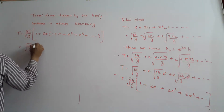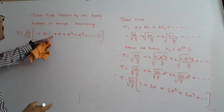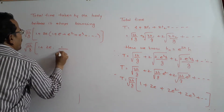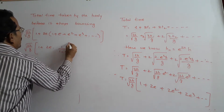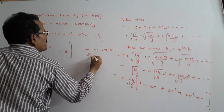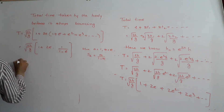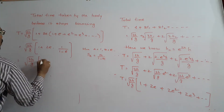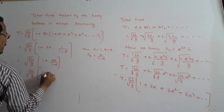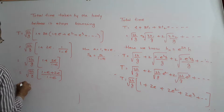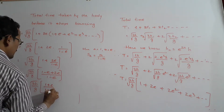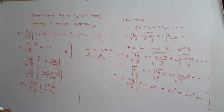T equals the square root of 2H by g into 1 plus 2e times (1 plus e plus e² plus e³ plus ...). The series in brackets is a geometric progression with first term a equals 1 and common ratio r equals e. The sum to infinity is a divided by (1 minus r), which gives 1/(1-e). Therefore, T equals the square root of 2H by g into (1 minus e plus 2e) divided by (1 minus e), which simplifies to T equals the square root of 2H by g times (1 plus e) by (1 minus e). This is the total time taken by the body before it stops bouncing.